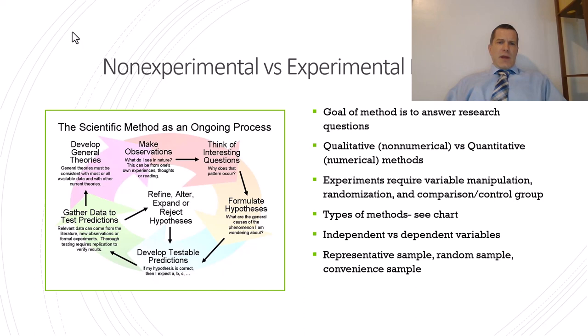So when it comes to experimental versus non-experimental methods, in order for something to be an experimental method, it requires three things: having a random sample, manipulation of the variables, randomization when it comes to sampling, which means everybody's randomly assigned, and then having a comparison or a control group.